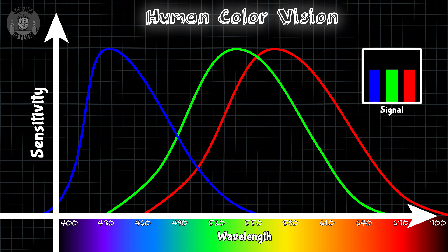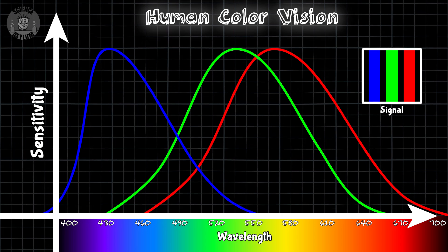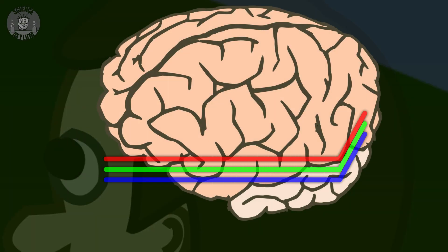but if something reflects enough different colors at the same time, all three different types of cones will activate at the back of your eye and send a strong signal to your brain. Your brain interprets that signal as white.